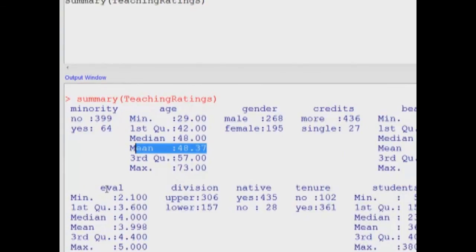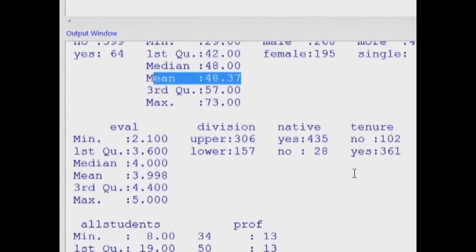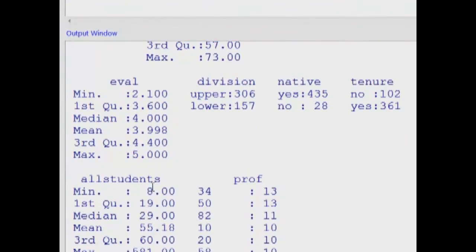All of the variables are either categorical - division, native, tenure, credits - and the rest are continuous.